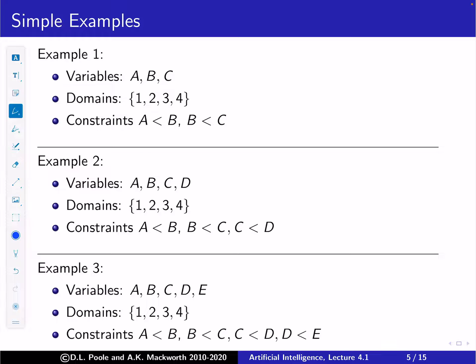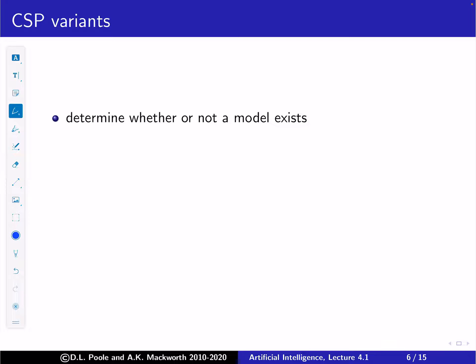Here's another case: variables A, B, C, D, E with domain {1, 2, 3, 4} and constraints A < B < C < D < E. Since we have five variables each needing a distinct value but only four available values, there are no solutions. Sometimes a CSP has no solutions at all.